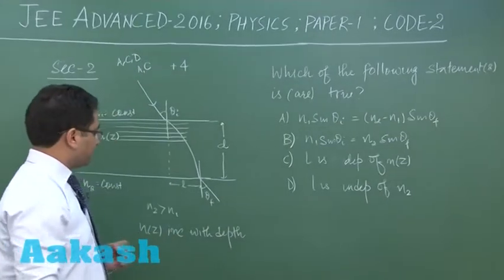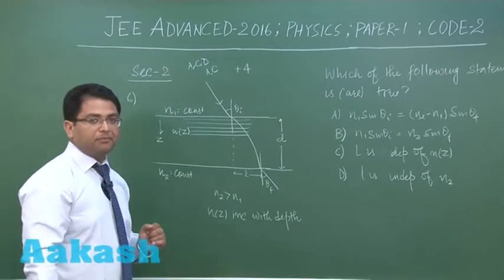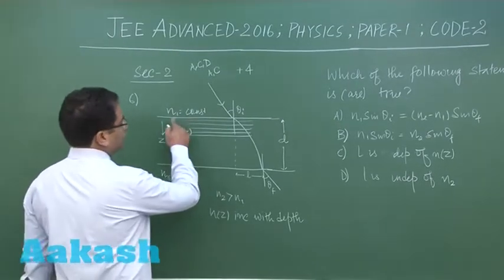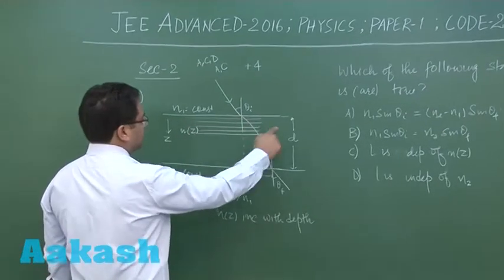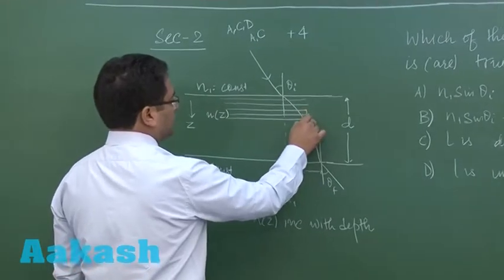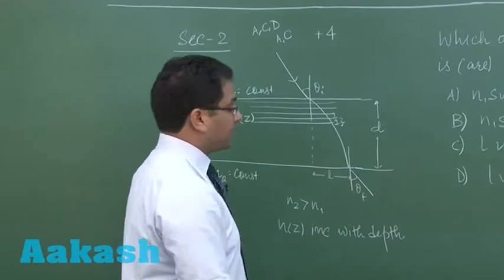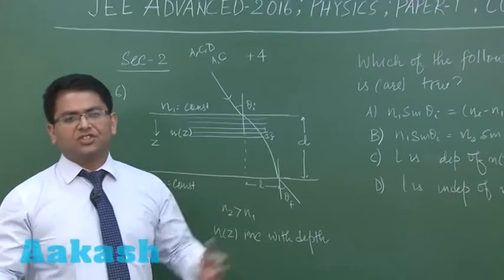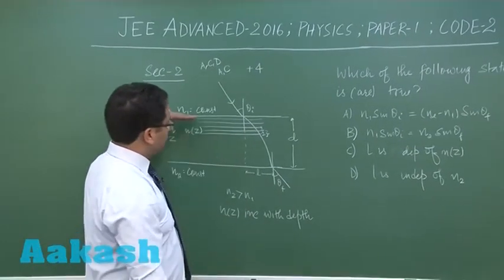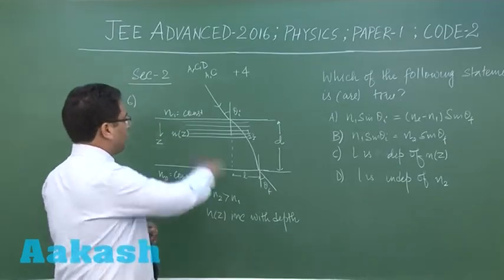Now the first thing is the refractive index is varying gradually; it's a continuous variation and the variation is with z. So therefore we can always make tiny slabs of infinitesimal thickness in this way, so that at least for one infinitesimal thickness the refractive index can be assumed to be constant. That's a very general idea of integration that we follow. So I have made these slabs just for the sake of simplicity.